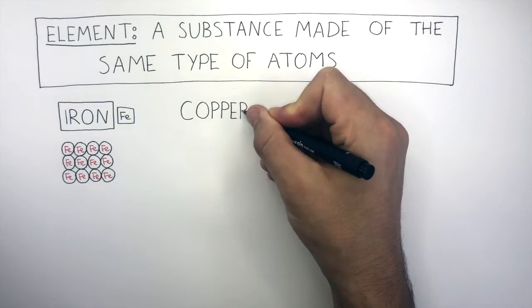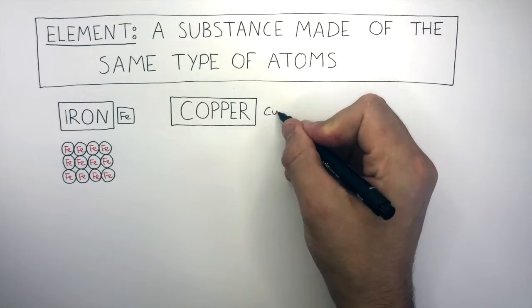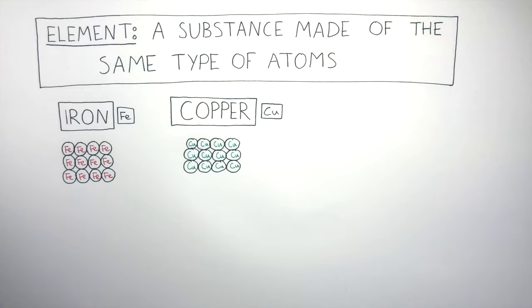Copper is another metal found in the periodic table. It has a symbol of Cu. And this particle diagram shows how in a sample of copper, because every atom is the same, this is an element.